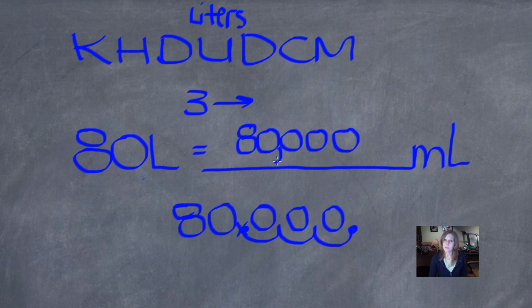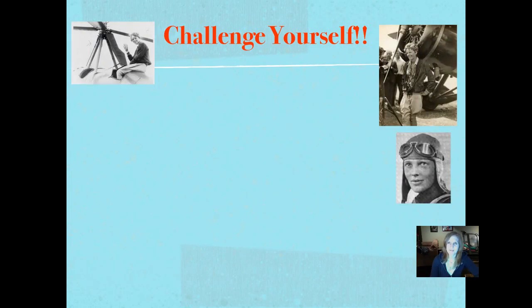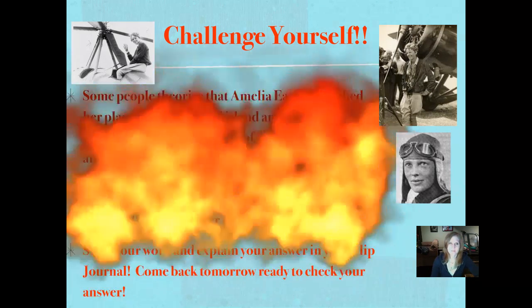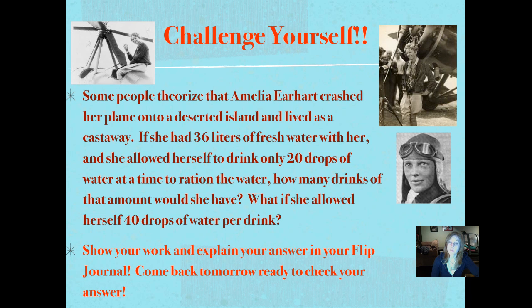It's time to challenge yourself. Some people theorize that Amelia Earhart crashed her plane onto a deserted island and lived as a castaway. She has never been found and her plane hasn't ever been found, although some people think that there are parts of it that have been found. If she had 36 liters of fresh water with her and she allowed herself to drink only 20 drops of water at a time to ration the water, how many drinks of that amount would she have? What if she allowed herself 40 drops of water per drink? You may have to go back and re-watch parts of this video or look at your notes to help you answer that question. Show your work and explain your answer in your flip journal and come back tomorrow ready to check it.